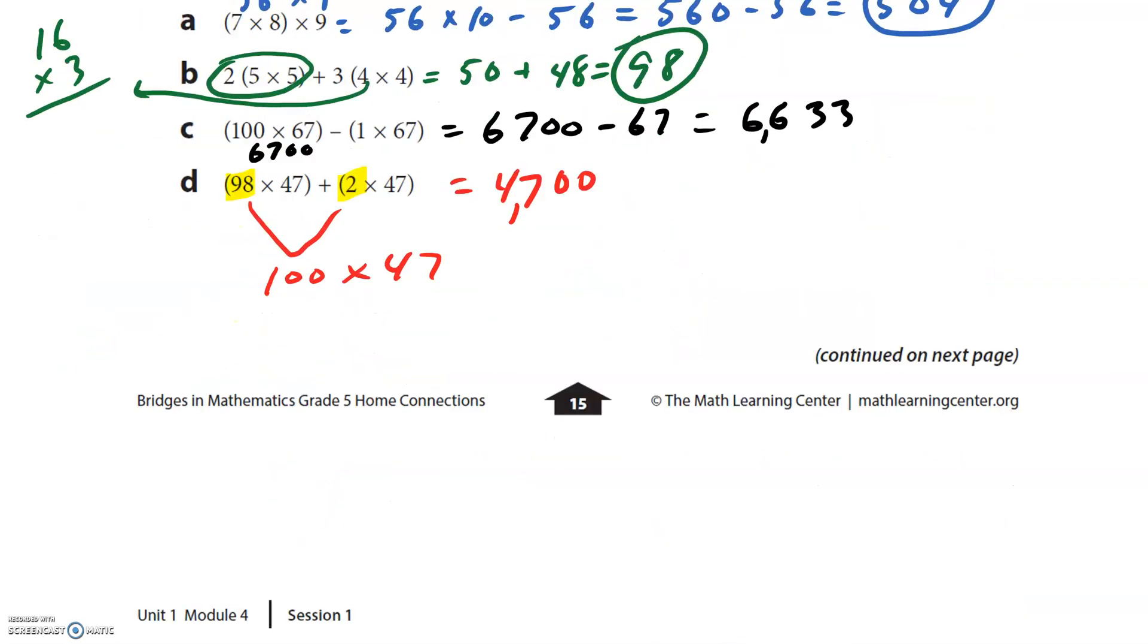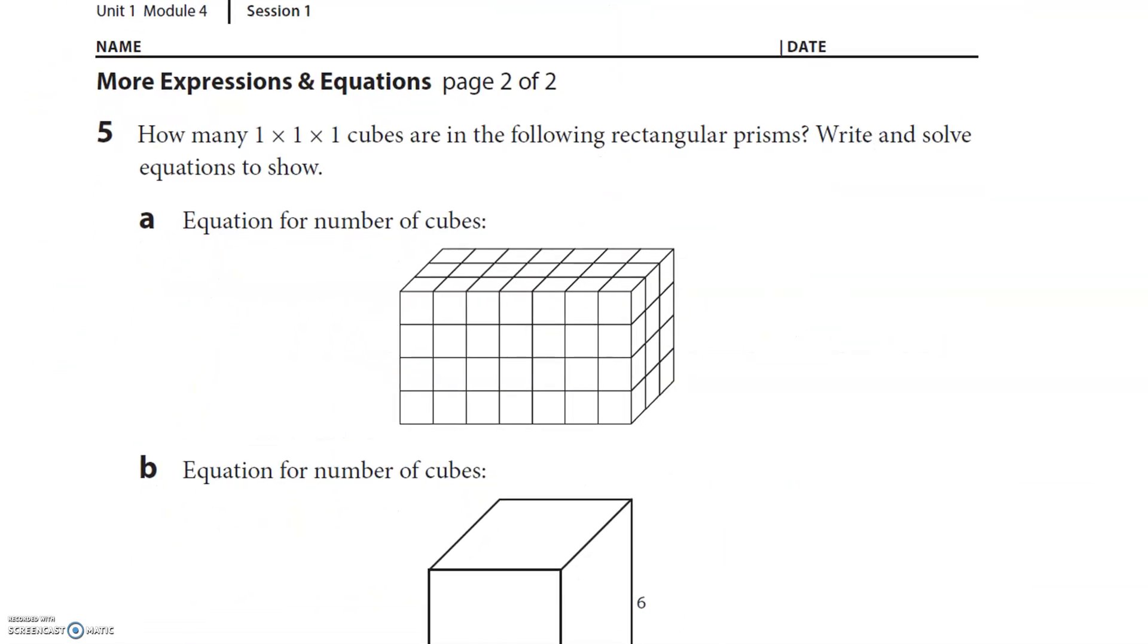Pause it if you need to try these. How many 1 by 1 by 1 cubes are in the following rectangular prisms? Write and solve equations. They want an equation. So I'm going to count the base: 1, 2, 3, 4, 5, 6, 7. There's 7 whole edges right there of cubes. And then 1, 2, 3 times 3. And then the height is 1, 2, 3, 4 times 4. So 7 × 3 × 4. 7 × 3 is 21 times 4. So 20 × 4 is 80. I believe I got 84, 84 one-by-one-by-one cubes.